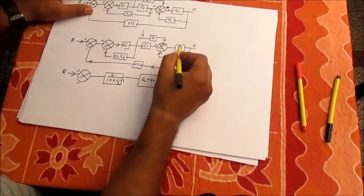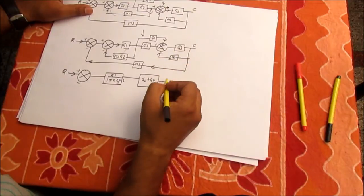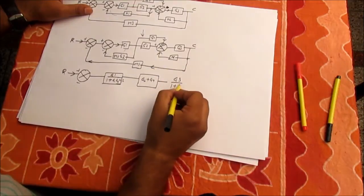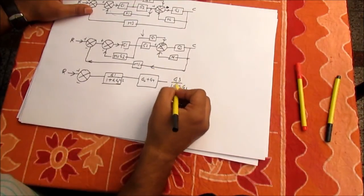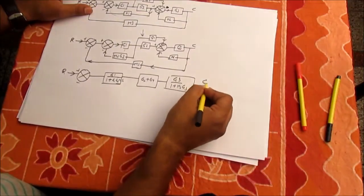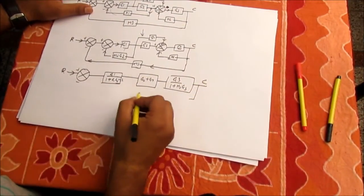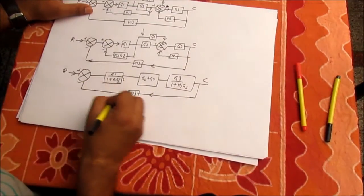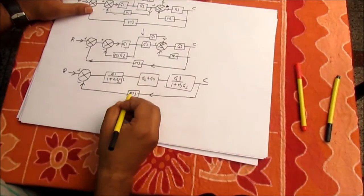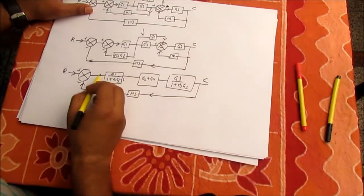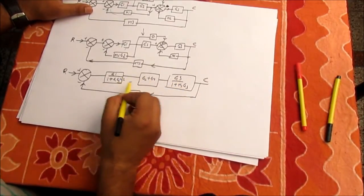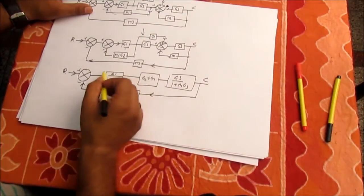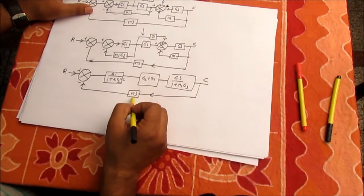G3 and H2 are in a feedback system, so their combined block is G3 divided by (1 + H2·G3). There is also the outer feedback system with gain H3 going back to the input with a minus sign. Now these blocks are all in series, so we can multiply them into a single block, with H3 as the outer feedback.